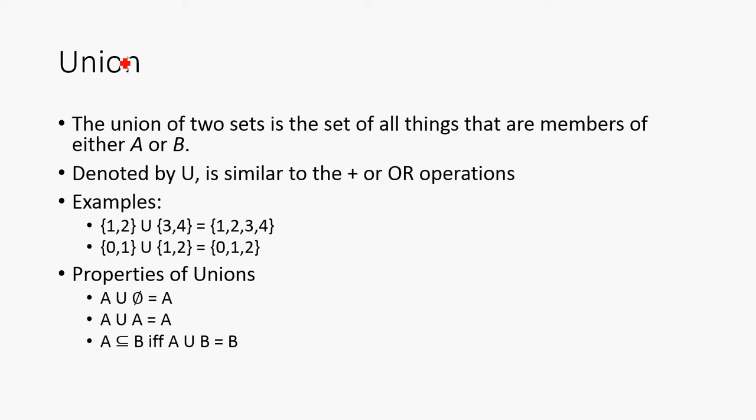So, the next operation that we're going to talk about is the union. The union of two sets is the set of all things that are members of either A or B. So, if we take two sets A or B, this is going to be the elements that are either in A or in B. And this is typically denoted by a big U. And this is similar to the addition or even the OR operation from logic. So, that was this guy right here. And notice that the OR symbol is very similar to the union symbol.